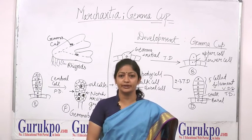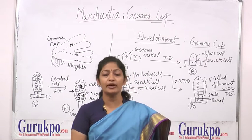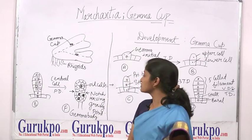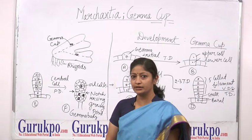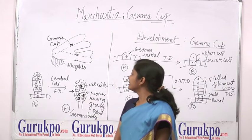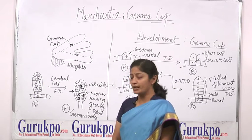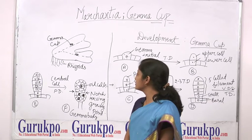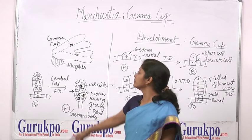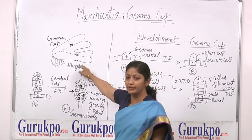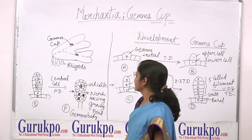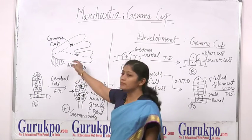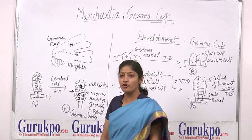They are mostly called liverworts and belong to the family Marcantia. If we see the structure of the thallus of Marchantia, it is dorsiventrally flat and dichotomously branched, with a prominent midrib.